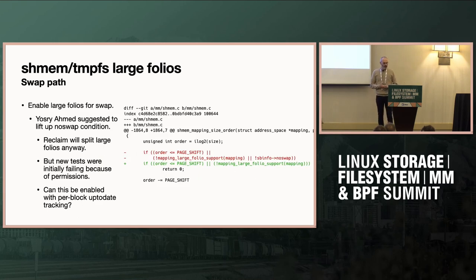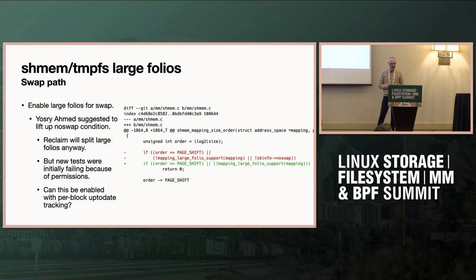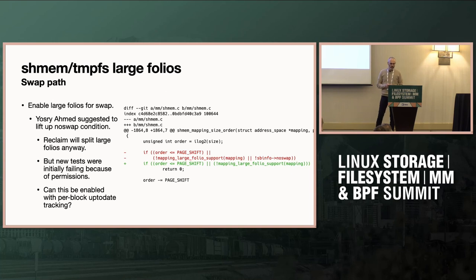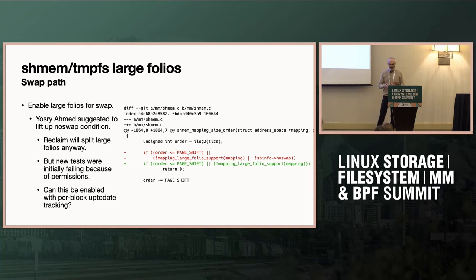We've been talking about swap, and Josh Lee mentioned in one of my first submissions why we are just not allowing the large folio allocation when we have swap, because reclaim will split the large folio anyway. With the latest patches I submitted, fixing all the up-to-date cases whenever you are doing the tracking, they all seem to work. That would be a second iteration — whenever we allocate a large folio, we are going to split that anyway, which is the same case for the pagecache and XFS.